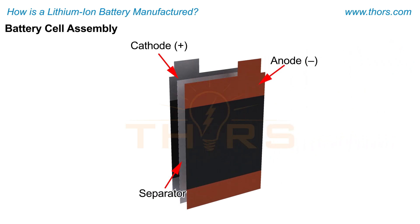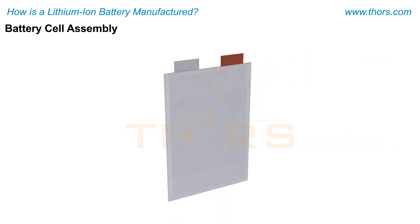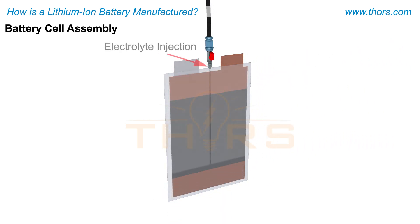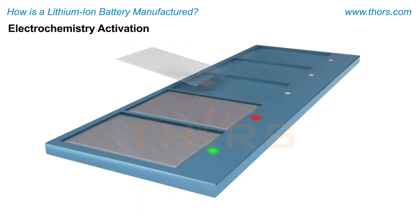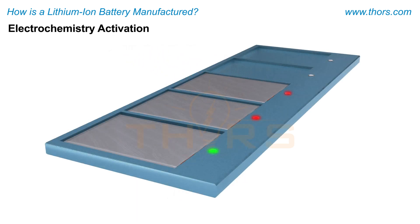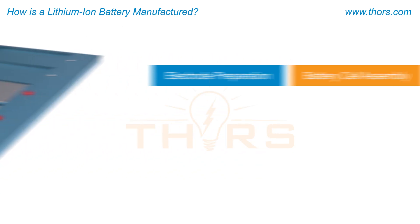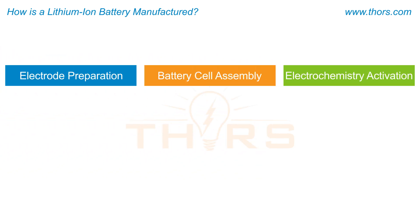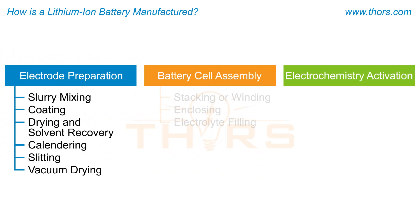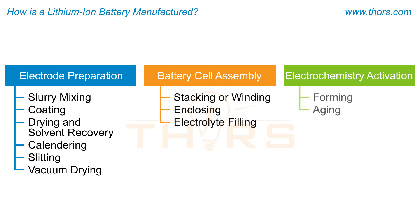In the battery assembly stage, the prepared electrodes are placed together with a separator sheet in between, and the electrolyte is injected. The electrochemistry activation stage involves activating the assembled electrodes. Each of these stages consists of a number of sub-processes, starting with the slurry mixing step to prepare the electrodes and ending with the aging step to ensure the quality of the battery cell.